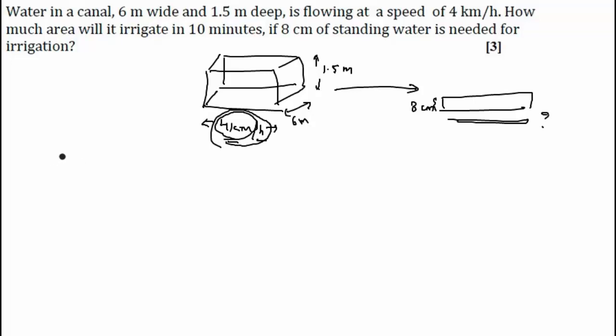So it is given that distance covered by water in 1 hour, that will be equal to 4 km. 1 hour is 60 minutes. So that is equal to, let us convert kilometer into meter, 4,000 meter. So in 60 minutes it is 4,000 meter. So in 1 minute it is 4,000 by 60 meters.